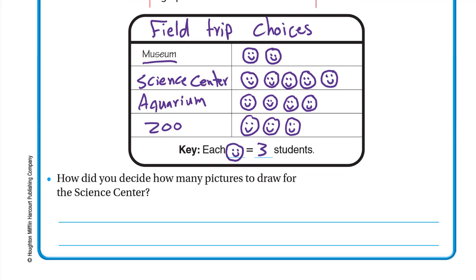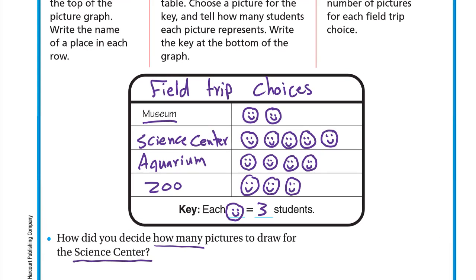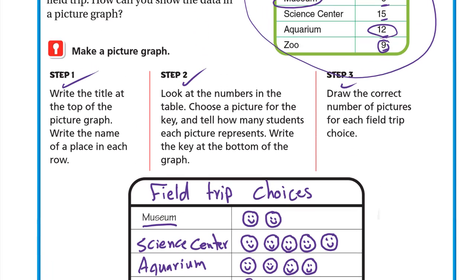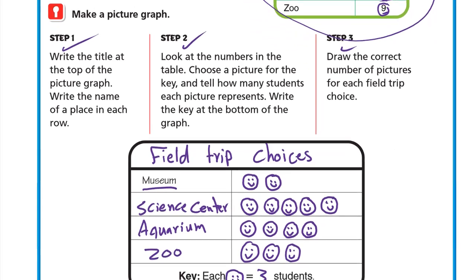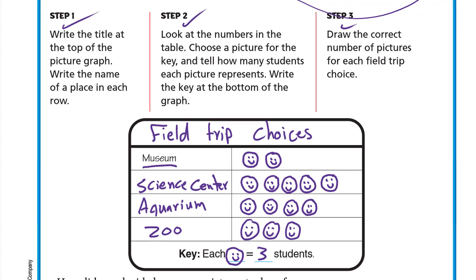The question asks: how did you decide how many pictures to draw for the Science Center? For the Science Center I drew five pictures because the table said 15 students. Each smile means three students, so I counted by three: 3, 6, 9, 12, 15. I stopped at fifteen, so I drew five pictures.